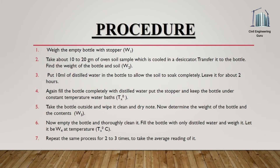Take about 10 to 20 grams of oven-dried soil sample which has been cooled in a desiccator. Transfer it to the bottle and find the weight of the bottle and soil. Put 10 milliliters of distilled water in the bottle to allow the soil to soak completely. Leave it for about 2 hours, then fill the bottle completely with distilled water. Put the stopper and keep the bottle under a constant temperature water bath.